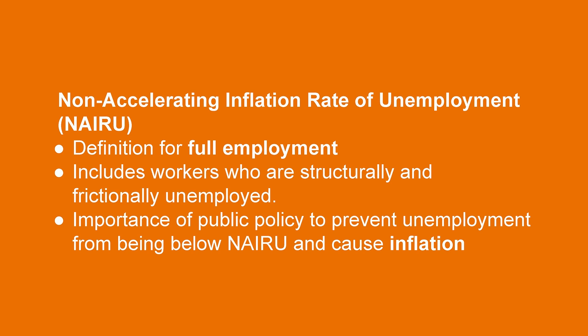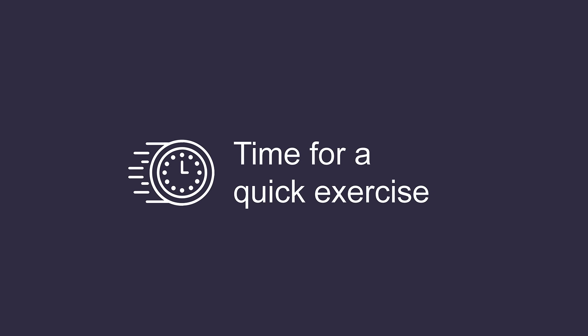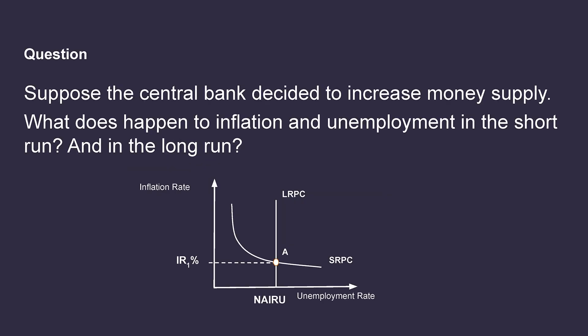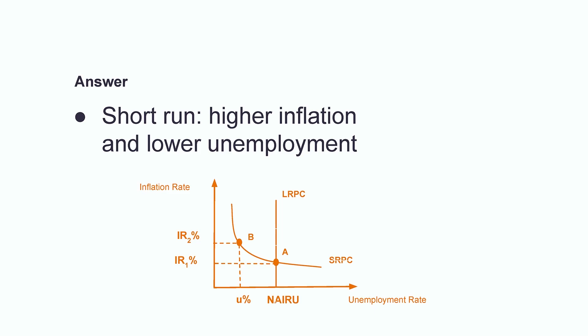Why healthy? Because some economies arrive at the conclusion that if the unemployment rate falls below the natural rate of unemployment, then inflation will be likely to occur. Now it's time for a quick exercise. The graph below shows the short-run Phillips Curve and the long-run Phillips Curve. The starting point is A, with a certain level of inflation and a certain natural rate of unemployment. Suppose that the central bank decided to increase the money supply. In the short-run, inflation is supposed to increase because of the higher money supply, which lowers the value of money. As for unemployment, since there is an inverse relationship in the short-run, it is supposed to decrease. The economy will arrive at point B, with unemployment reaching below the natural rate.